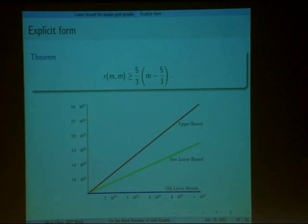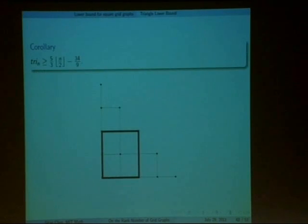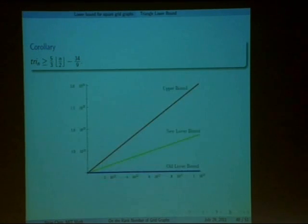So ultimately, we've proven that if we rewrite our lower bound explicitly, we get the following linear function. Notice here, this is the current upper bound, and the previous lower bound for square grids was logarithmic. This is our new lower bound. It turns out that a corollary of this is that because triangle grids will contain squares roughly of this size, we can actually bound the triangle grid rank number to above a linear function as well, which is significantly better than the old lower bound.